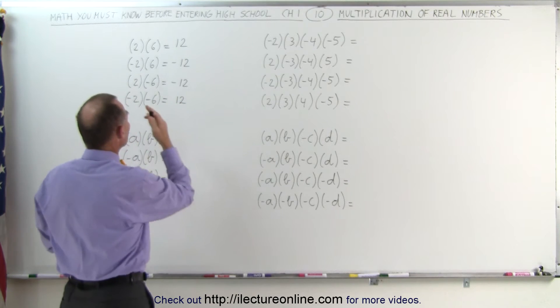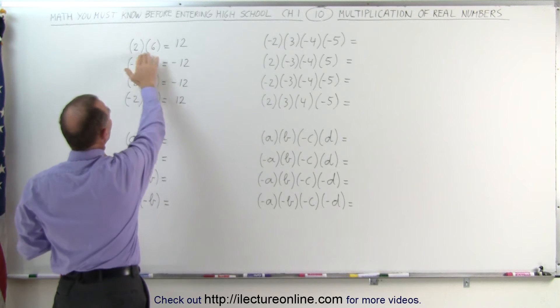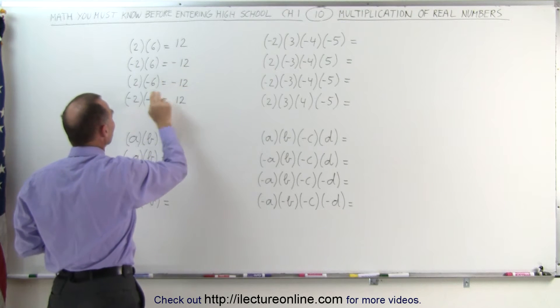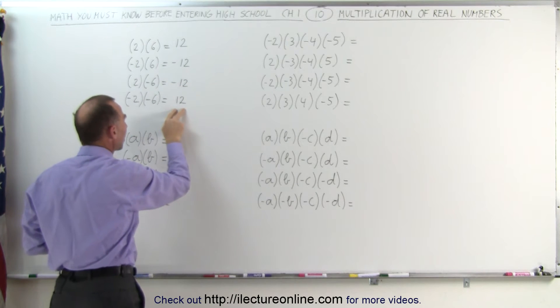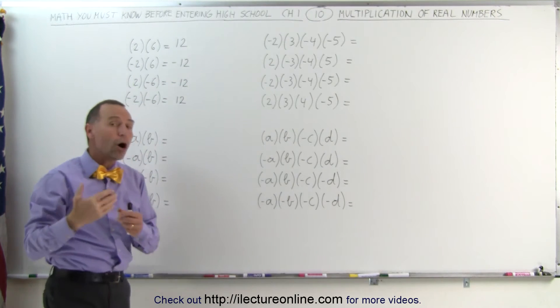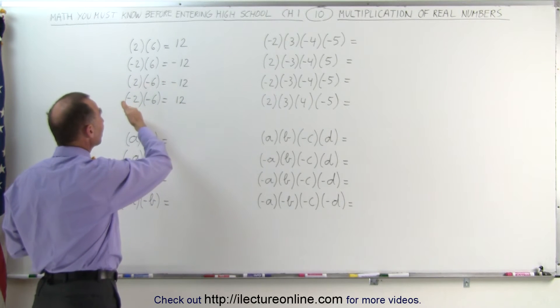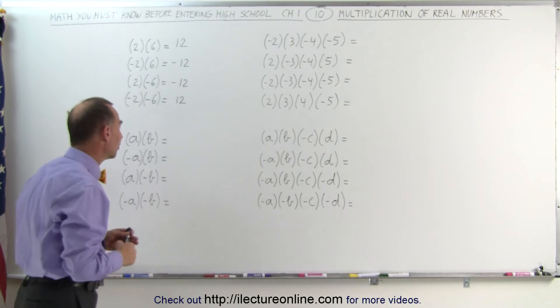The key is, when you multiply, when all of them are positive, the answer will be positive. When one of them is negative, the answer will be negative. When both of them are negative, the answer will be positive. If you have an odd number of negatives, the answer will be negative. If you have an even number of negatives when you're multiplying together, the answer will be positive.